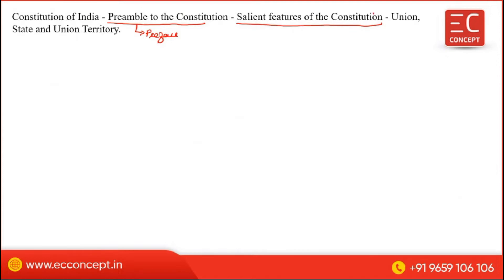After the preamble, we look at the Salient Features of the Constitution — that means the characteristics of our Constitution. The next part covers Union, State, and Union Territory, which deals with how the Indian Union is structured.